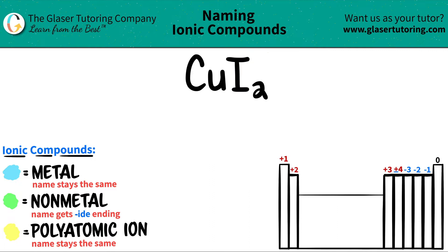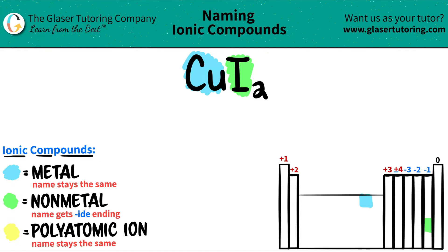Let's just see which one is the metal and which one is the non-metal. CU, which is copper, is a metal because it's in this block on the periodic table — specifically a transitional metal. Iodine is a halogen, and halogens are non-metals. Iodine is over here on the periodic table, so that's a non-metal.